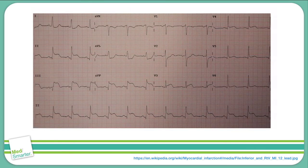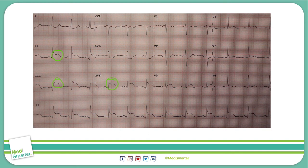As you see in this example, we do have ST elevations in leads 2, 3, and AVF, which — going back to our previous chart — shows that we are dealing with an inferior wall myocardial infarction.